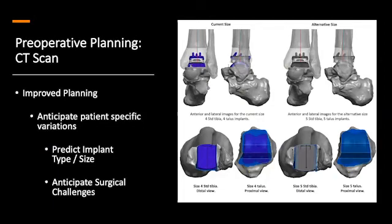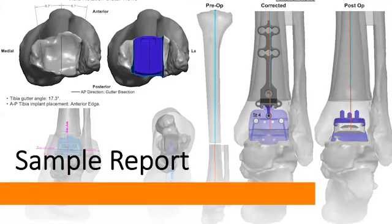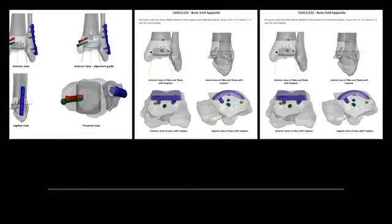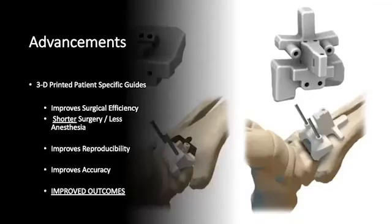Another advancement over the last several years is preoperative planning. In my opinion, this has really changed the game in total ankles because we're able to dial in our correction, our sagittal and coronal alignment, and better balance the total ankle replacement. This allows us to predict the size of the implant and anticipate surgical challenges. Alignment and getting this implant in the correct sagittal and coronal plane have been shown to improve the longevity of these implants.